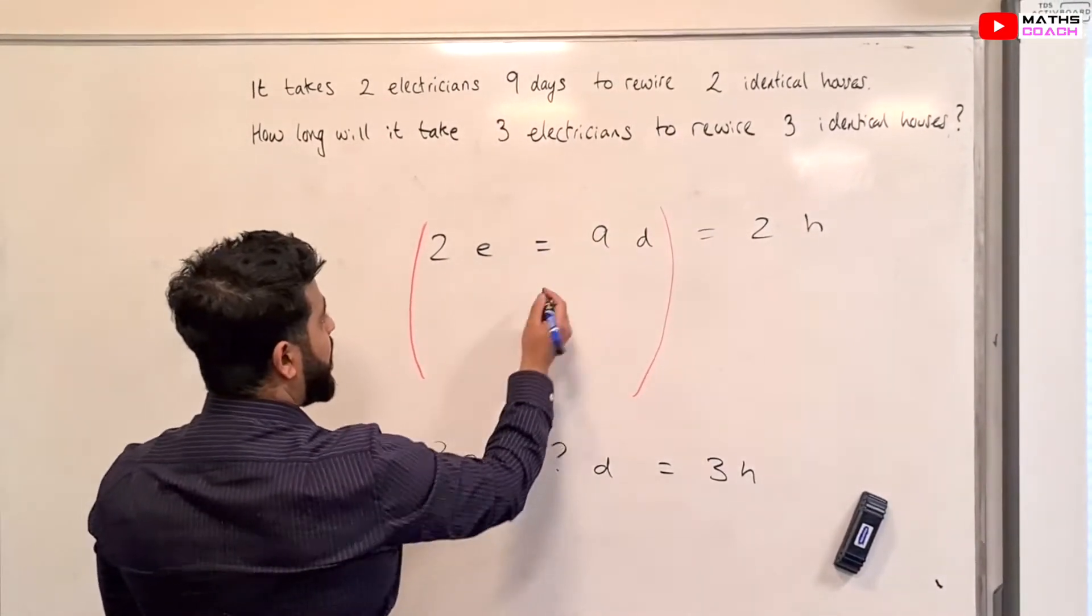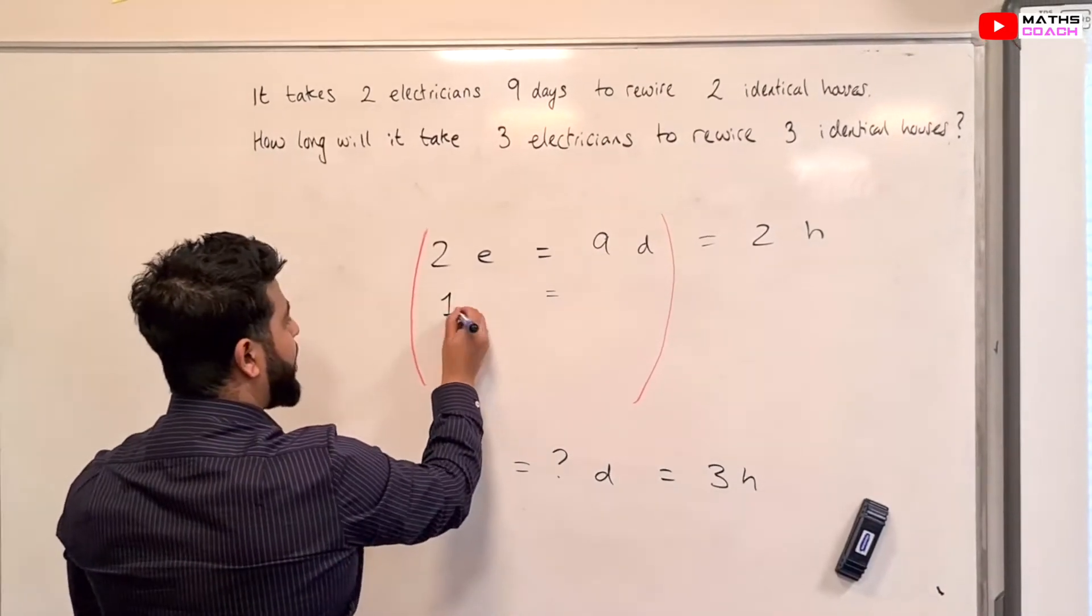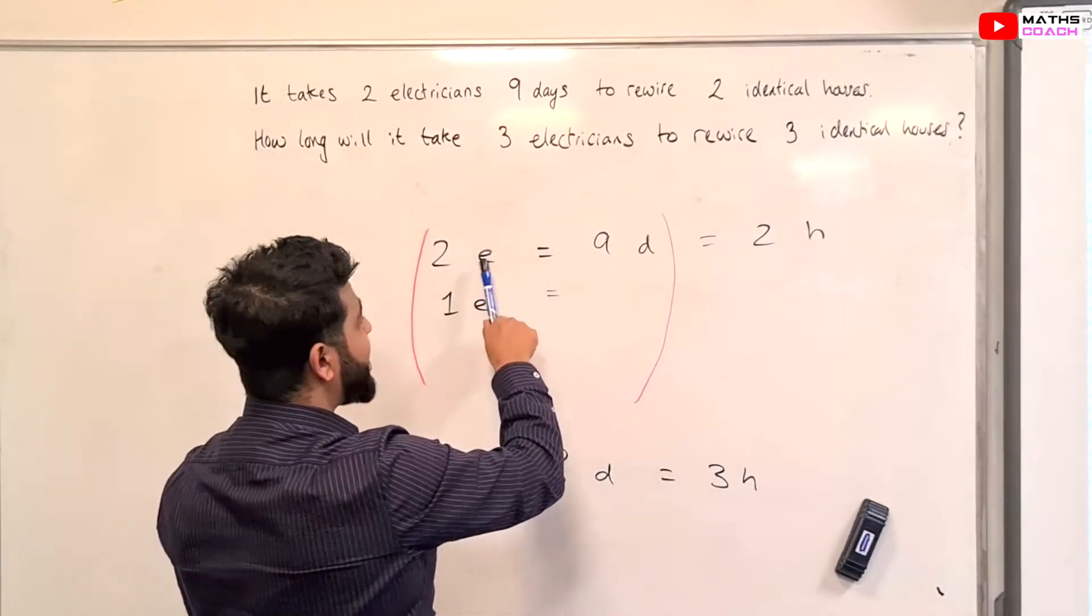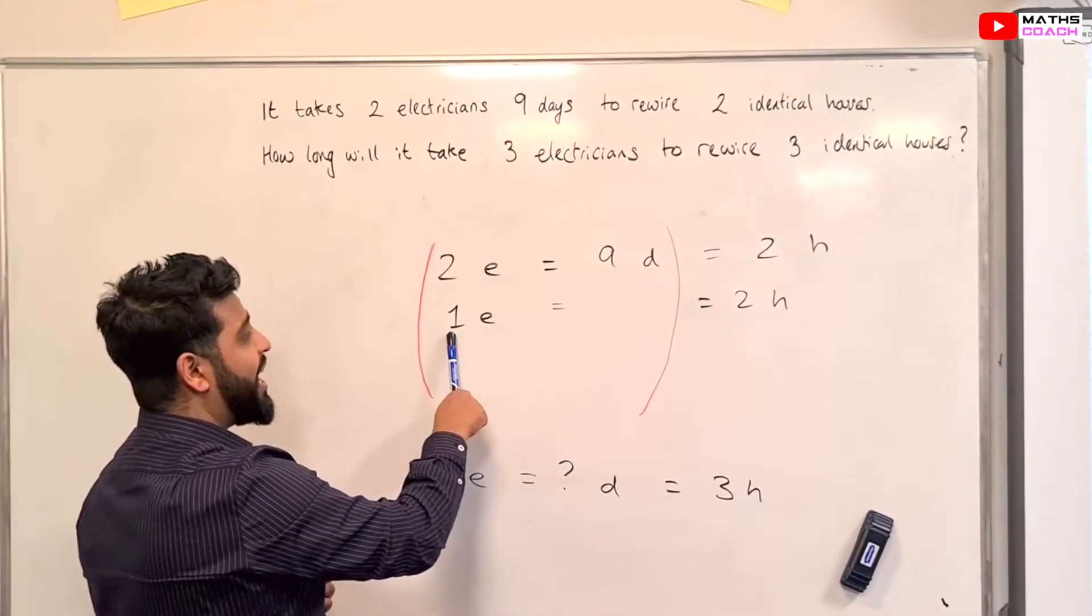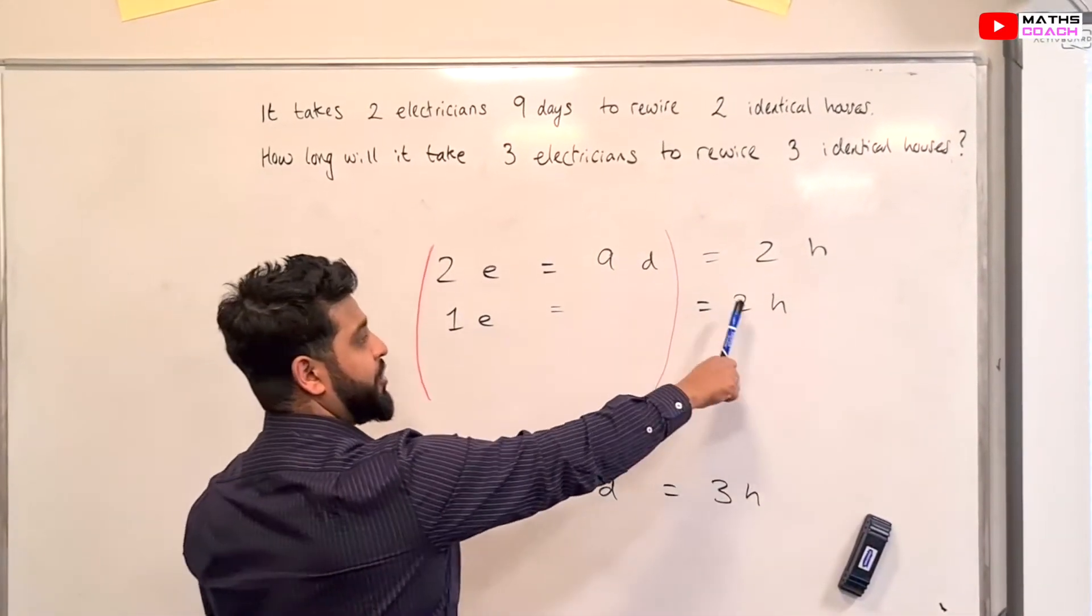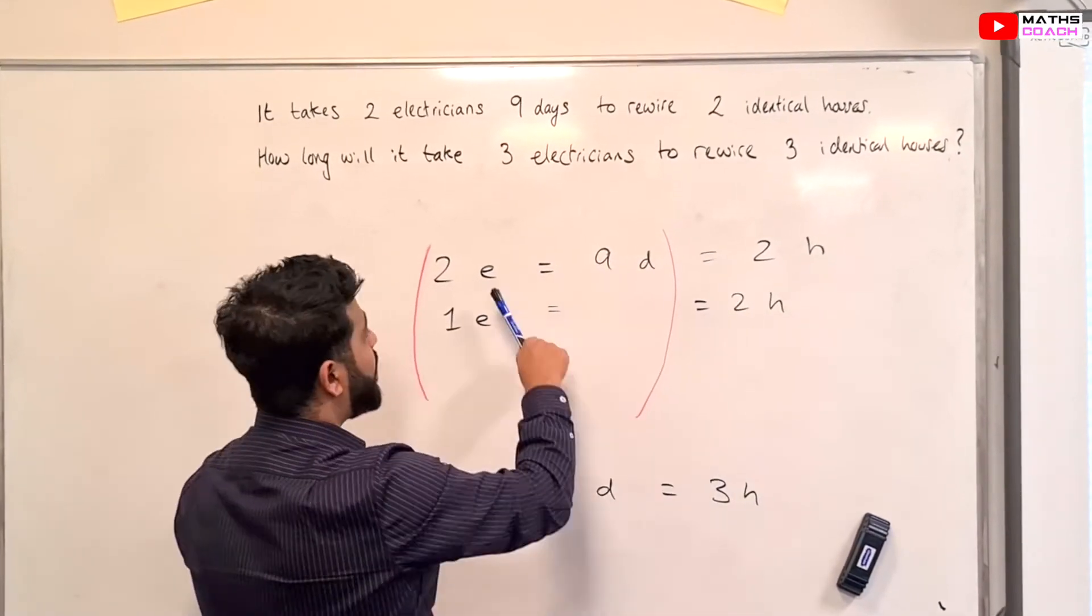So, what do we need to do? Let's go down to one electrician. If it takes 2 electricians 9 days to rewire 2 houses, how many days will it take 1 electrician for 2 houses?